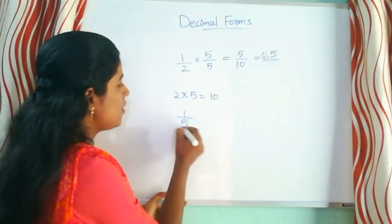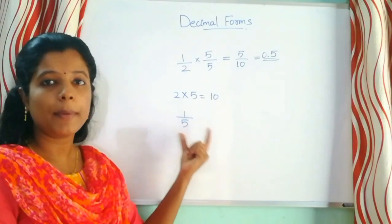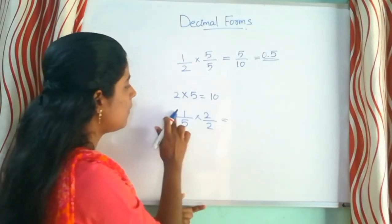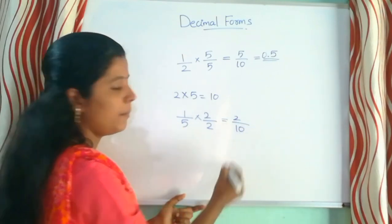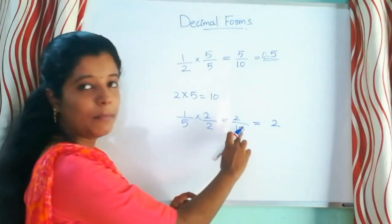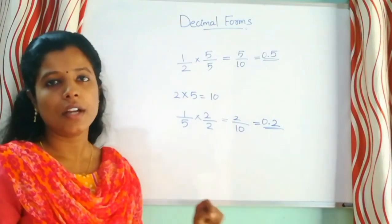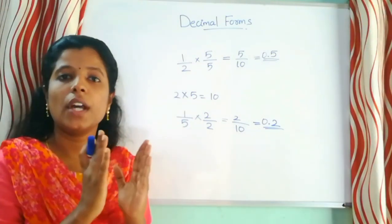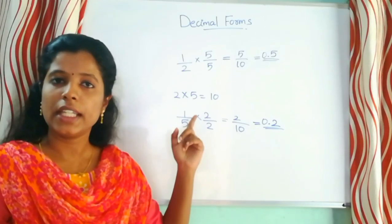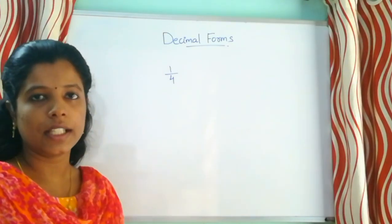Now we have to add 1 by 5. If I add 2 to this number, I have to add the denominator to this number. We have to multiply 2 by 2. We have to add 10. We have to add the denominator. If we add the numerator, we add 0.2 to this number. All numbers are applicable.